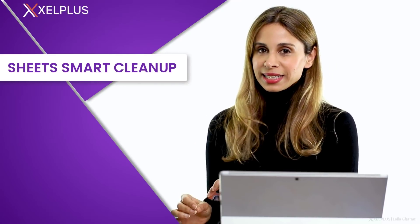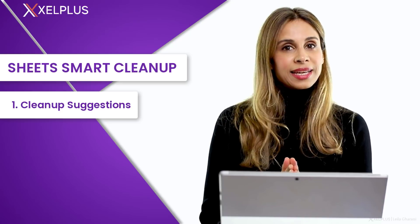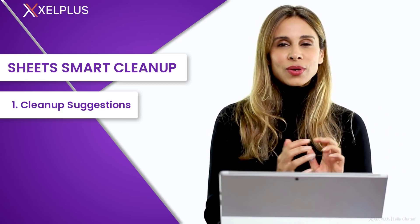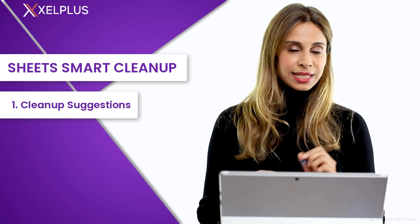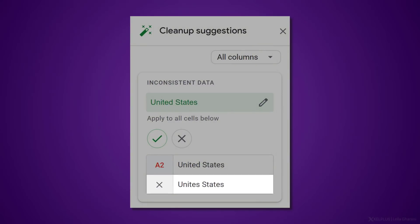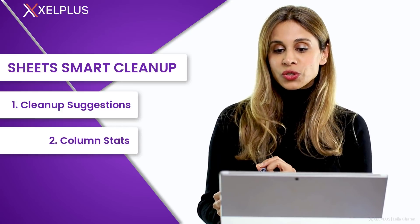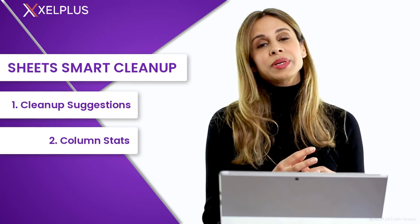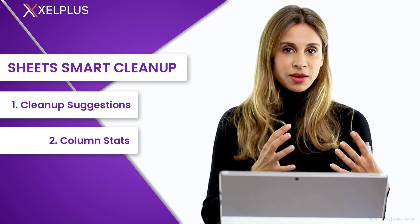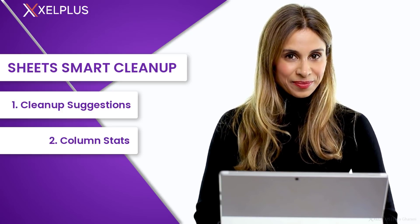Google Sheets recently introduced a new feature called Sheets Smart Cleanup. With this feature, you get to do two things. Number one, it takes a look at your dataset and tries to find out if there could be any problems — for example, are there any duplicates, or anything that might be spelled incorrectly? It gives you a chance to fix your dataset before you analyze it. Number two, it can look at a column and give you statistics based on that column. We're going to take a first look at these two features together.